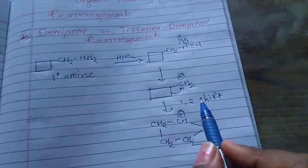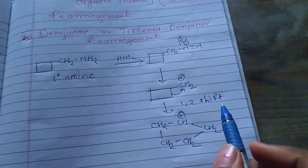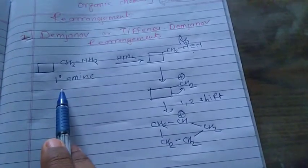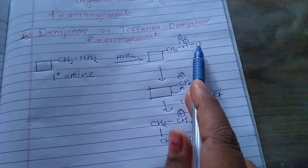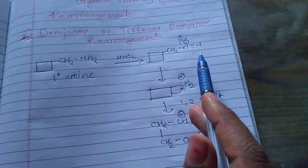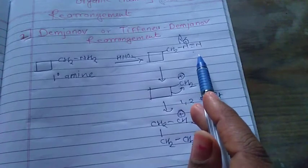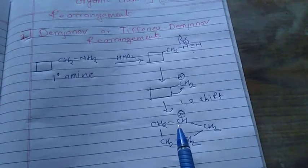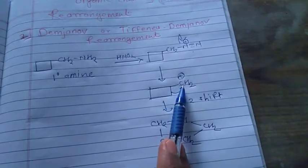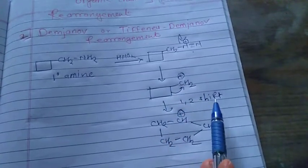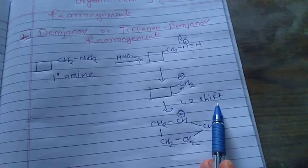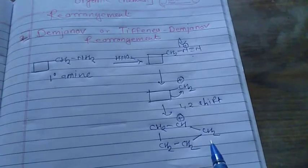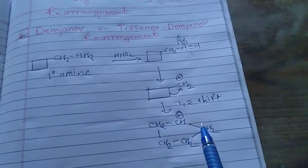In this reaction, the primary amine first gets converted to the diazonium compound. Then this diazonium compound gets converted to a carbocation. This carbocation is stabilized by 1,2 shift or 1,2 rearrangement. Whenever this 1,2 rearrangement happens, there is a ring expansion that takes place.